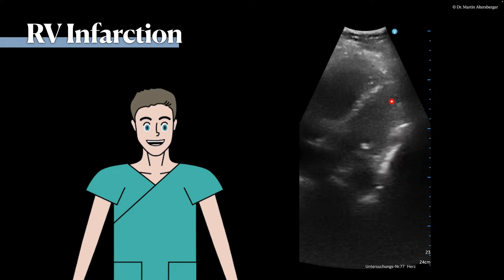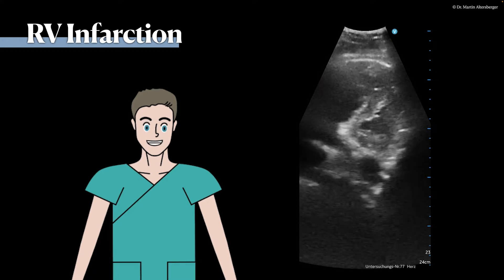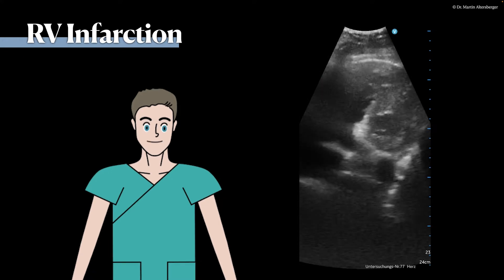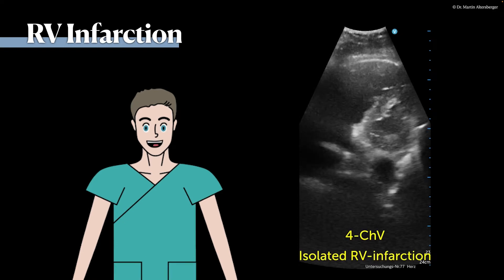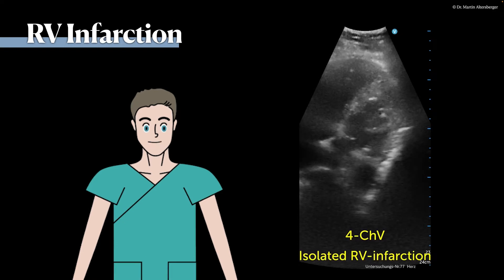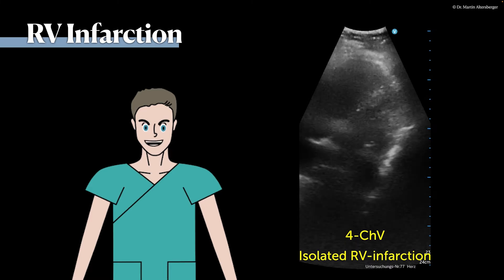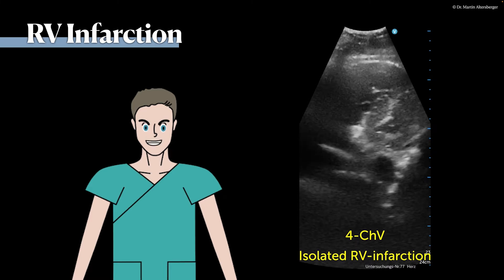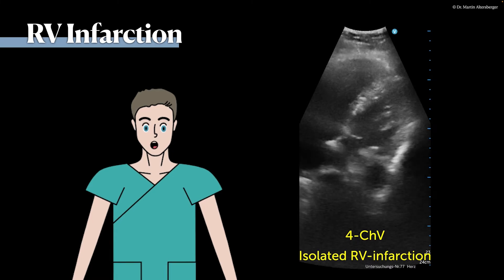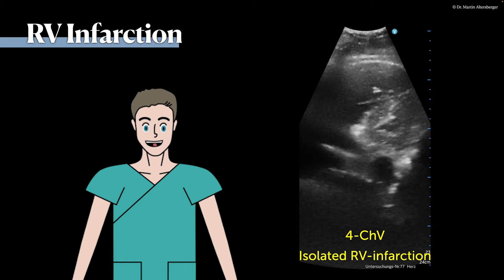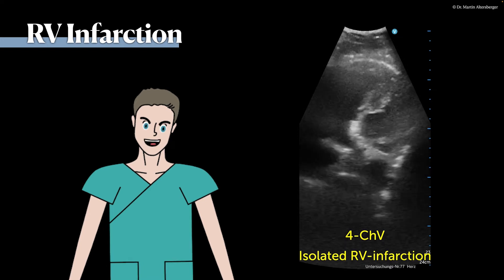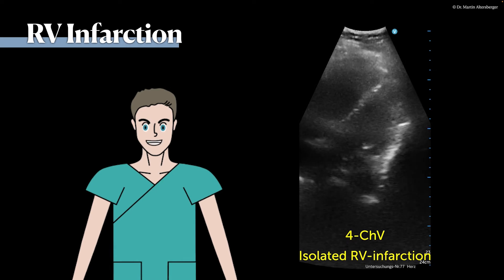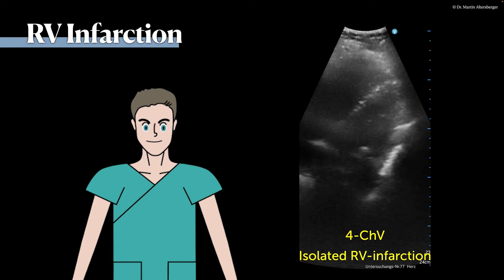The right ventricle is dilated. The left ventricle doesn't seem to have a problem, but truly the right ventricle is the chamber we have to think about. Due to the lack of contraction of the right ventricle, we had mainly a volume problem, which has to be resolved with volume treatment and of course with angiography.